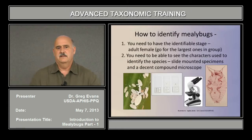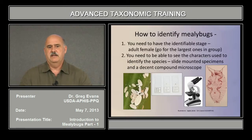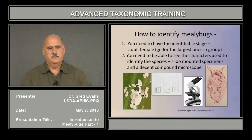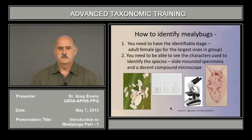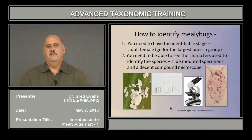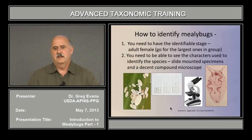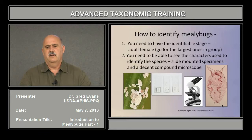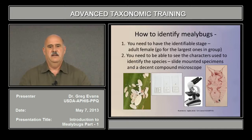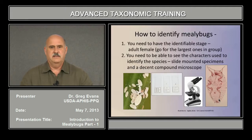That's why it's important to identify them — to stop them from entering the country and becoming pests, or if they're already here, to better control them. So how do we identify mealybugs? First, you need to have the identifiable stage present. Mealybugs are only identified to species level if you have the adult female. You also need to be able to see their characters, and you need a good slide mount of specimens and a decent microscope with good resolution at 400x power.